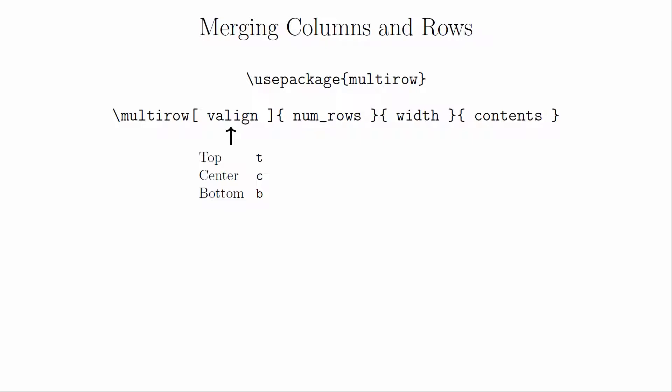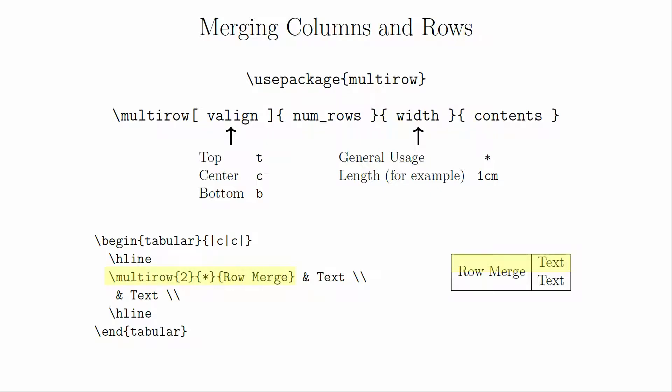The first curly brackets indicate how many rows you want merged. The next curly brackets will declare the width of the column. As long as you're not doing anything too fancy, you should be able to use a star here. But you can also use a measurement to create a specific width. The last brackets represent the contents of the cell. You will need to use the multirow command on the top cell that will be merged, and on the lower rows you will need to create a blank cell where the merged cell is located.